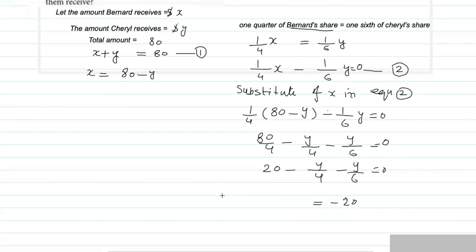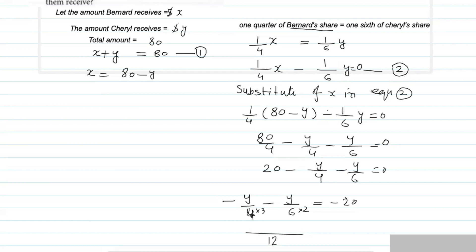Rearranging: y/4 + y/6 = 20. To simplify, we need to make the denominators the same. Multiplying the first fraction by 3/3 and the second by 2/2 to get a common denominator of 12. When multiplying the denominator you must also multiply the numerator by the same value to keep the fraction equivalent.